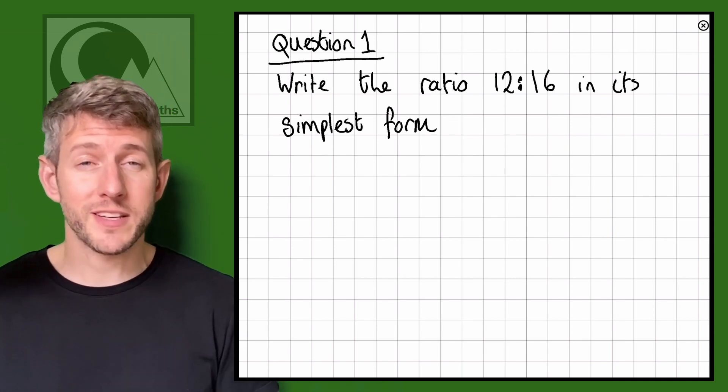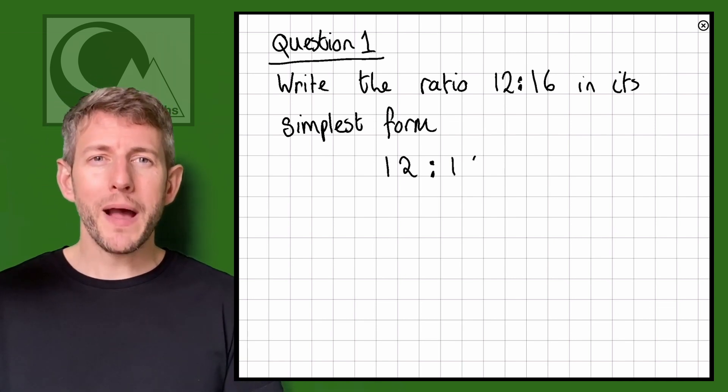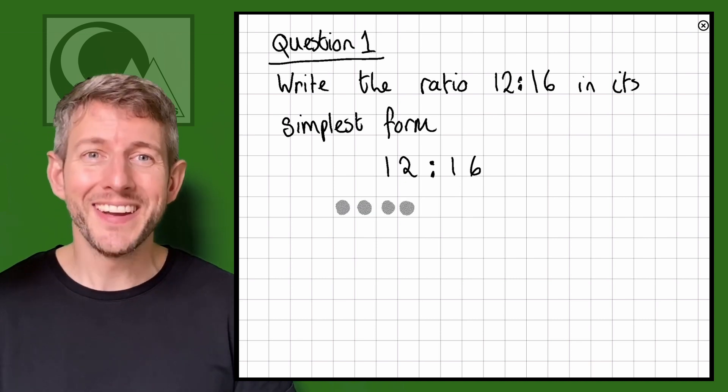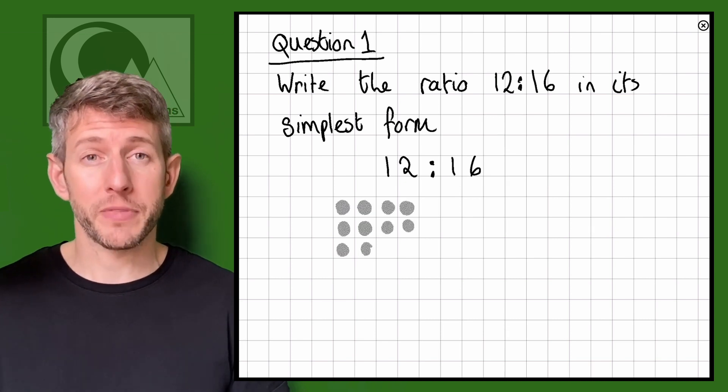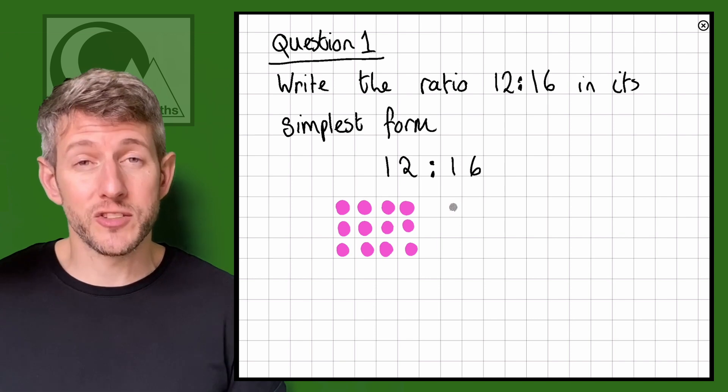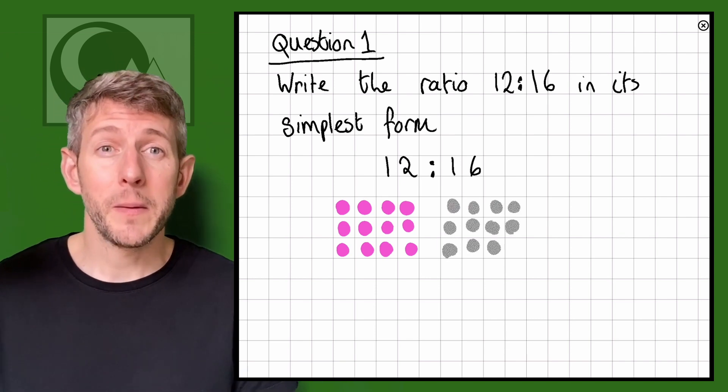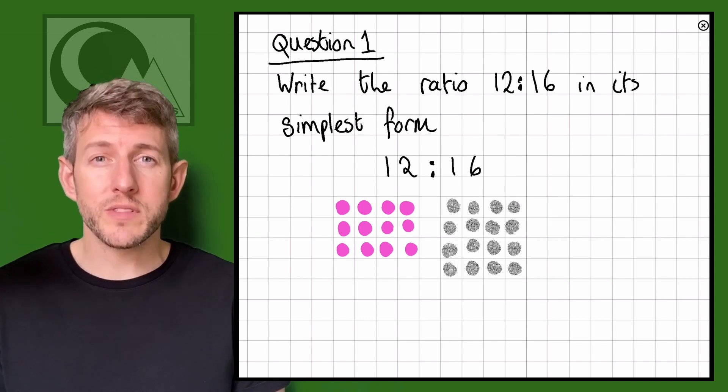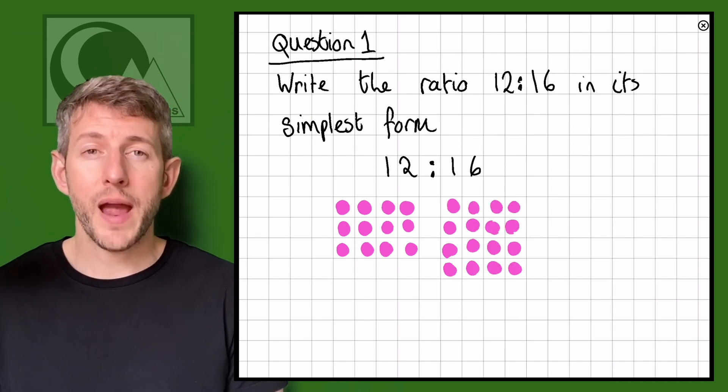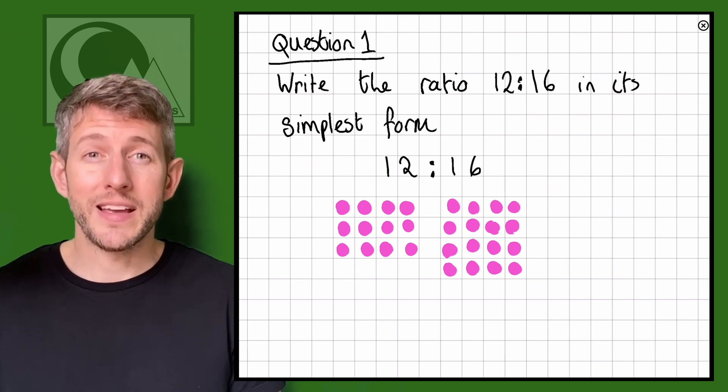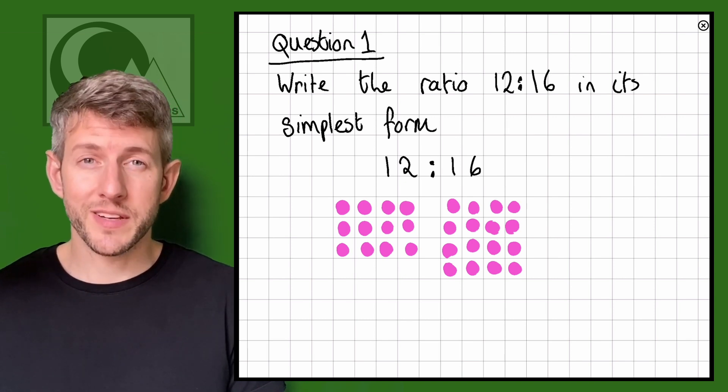I'm going to write 12 to 16 up here first, but what I'm now going to do is draw this in terms of dots. I'm going to draw 12 dots on one side and 16 dots on the other. I'm drawing them here because basically what we want to do is see if there is another way of describing this ratio that is simpler than 12 to 16.